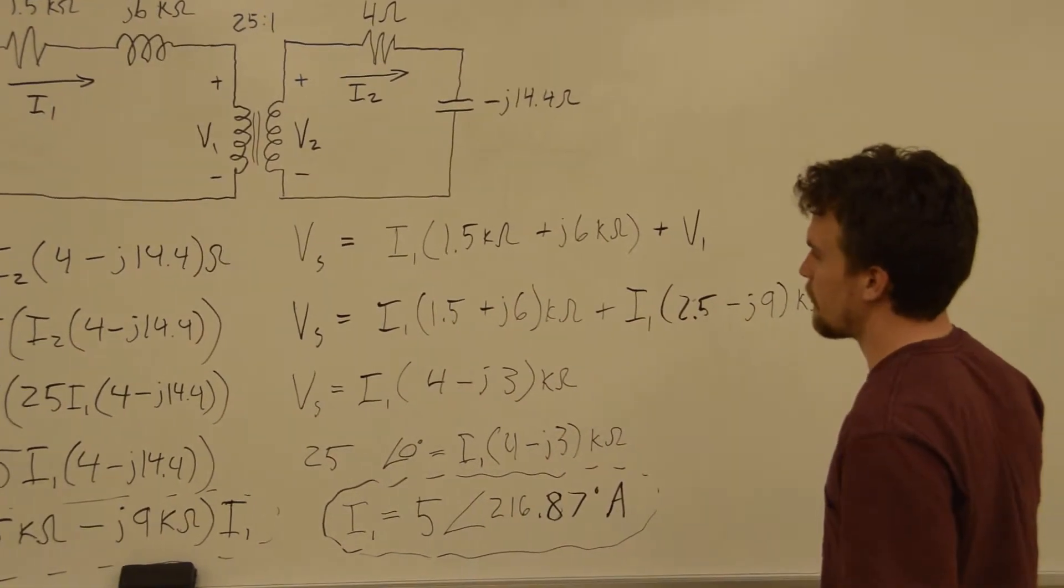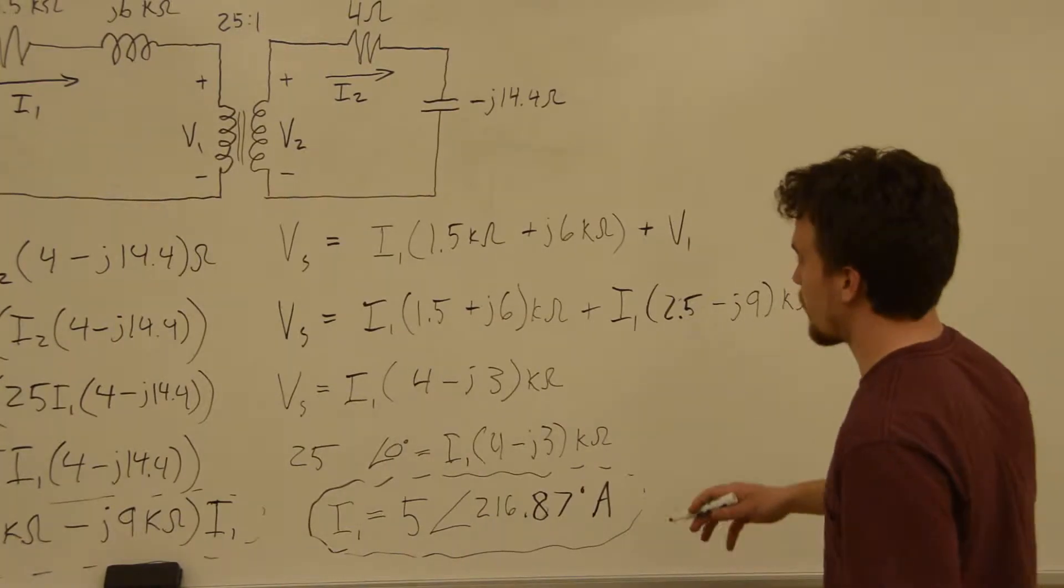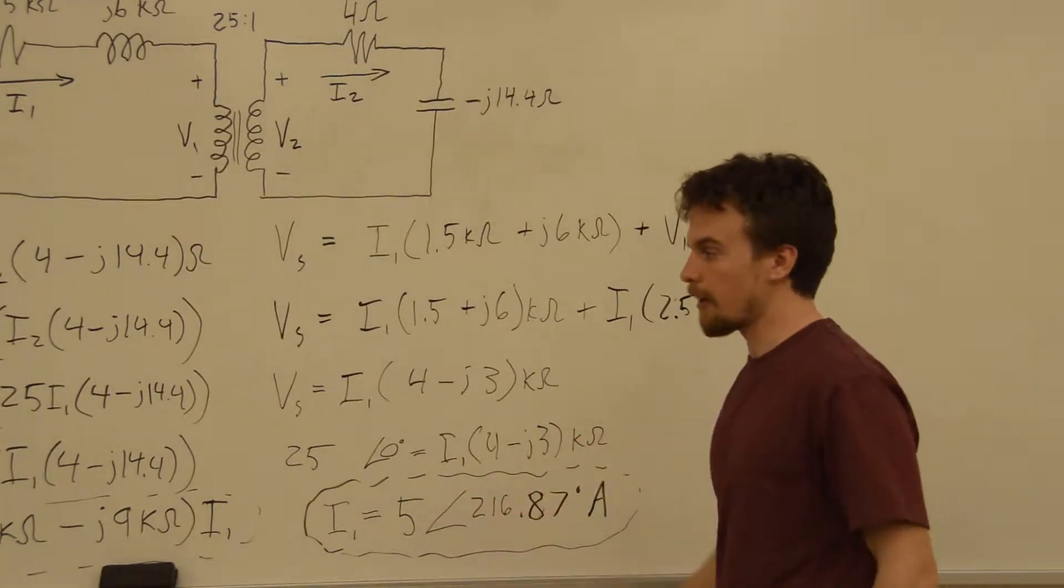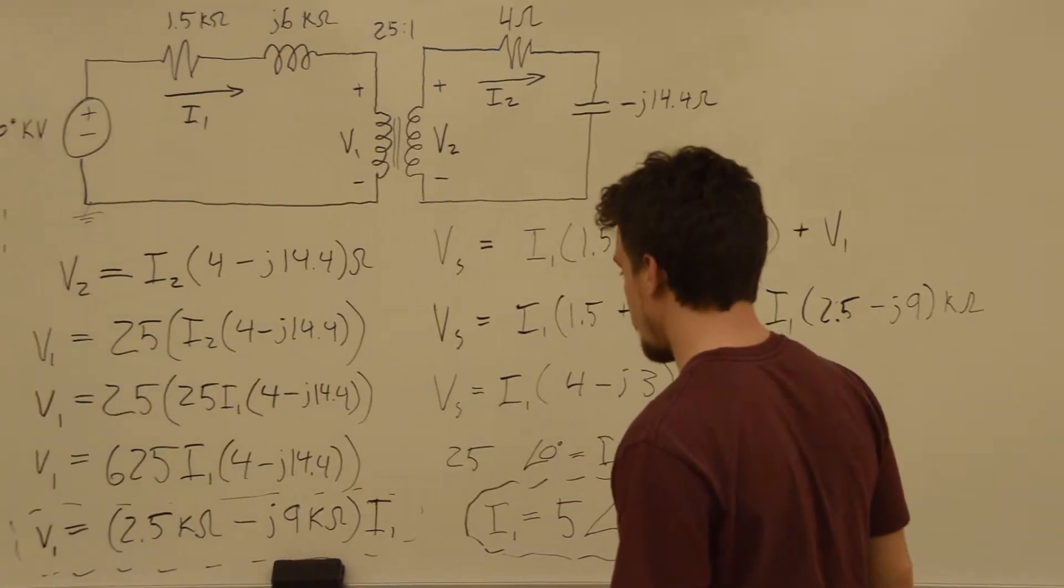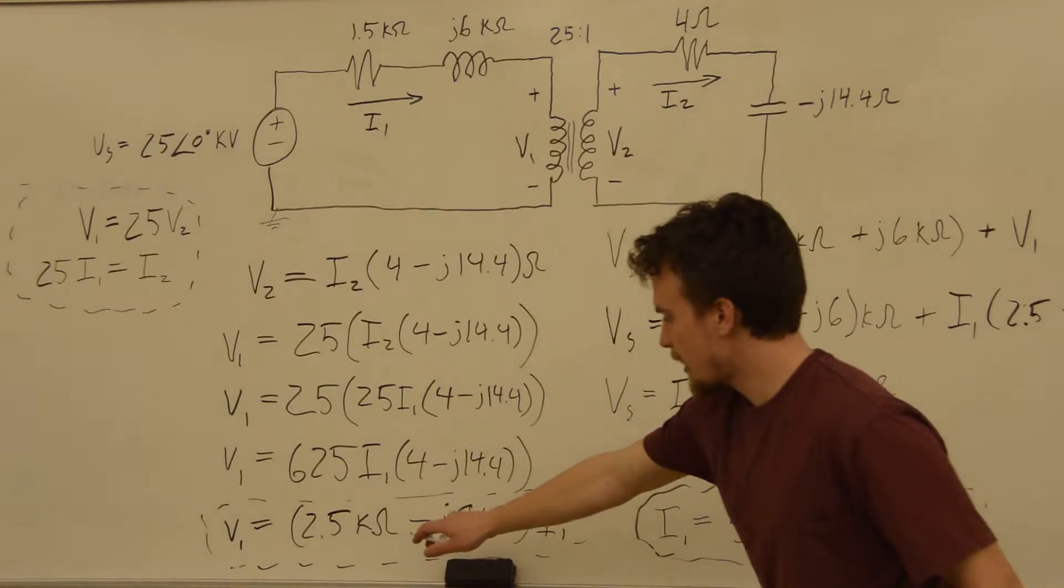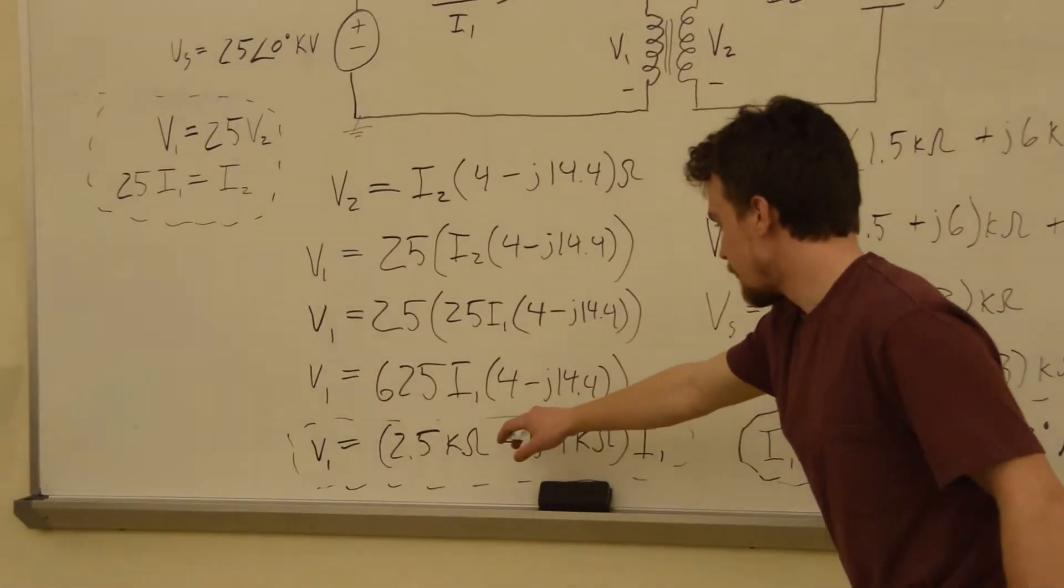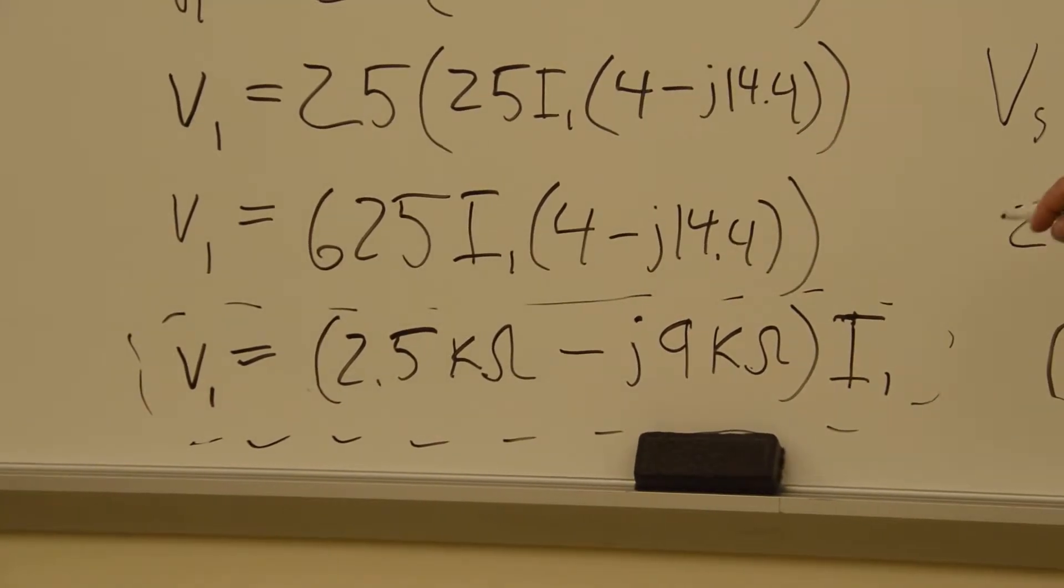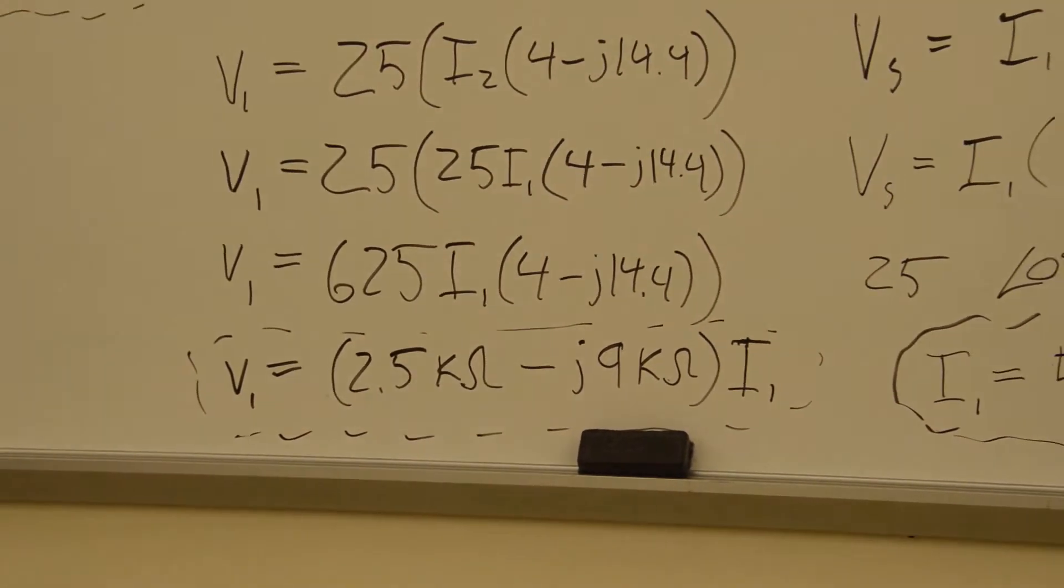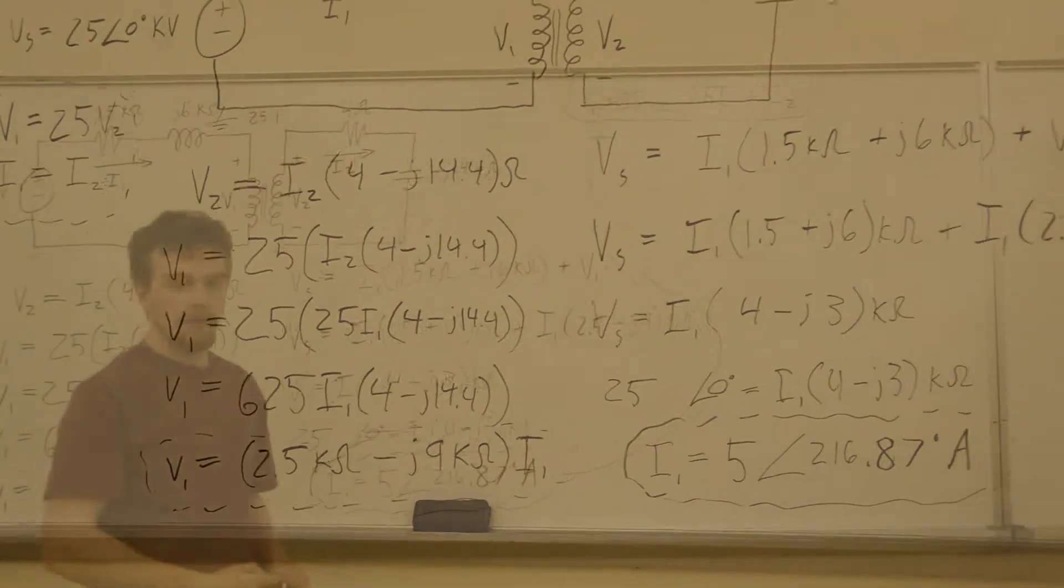Now we should be able to solve for a definite value of V1 with our definite value of I1. We have this equation back here again. We have V1 is equal to 2.5 kilo ohms minus J9 kilo ohms times I1. And now we have a value for I1.